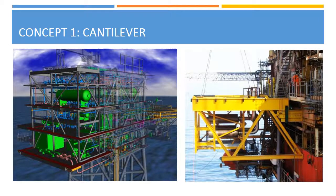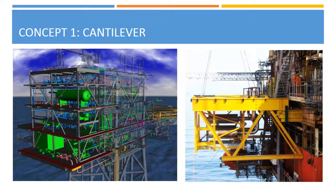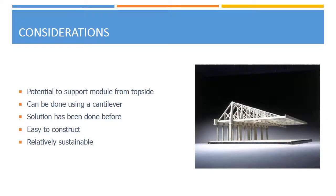Cantilever concept. The module can be attached to the side of the superstructure. There is precedent for this where the same solution was used on the older platform. There is no available space on the top of the platform, and therefore an effective solution is to fix the module to the structure using a cantilever. This can be done using a simple truss structure, suspending the module using tension cables, or propping the structure from below.